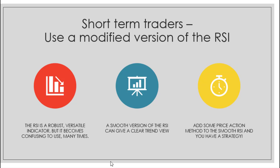This clear trend is not a guarantee — there is no guarantee in the market — but it is good enough. At least we get a starting point. With the smooth RSI, we need to add some price action methods so that we get a strategy. Remember, no indicator by itself is enough to give you a strategy. You have to add some price action, some price mechanism, so that the strategy becomes available to you.